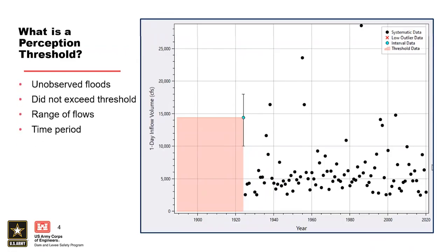What exactly is a perception threshold? A perception threshold defines a boundary between floods above the threshold that would have been observed and documented if they had occurred, and floods below the threshold that occurred but were not observed. So perception threshold is defined by a flow value called the threshold and a period of time. By assigning the perception threshold and time period, we're saying that if there had been a flood greater than that threshold during this time period, the flood would have been observed.